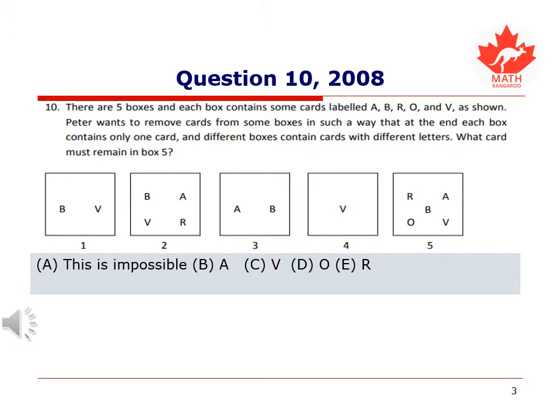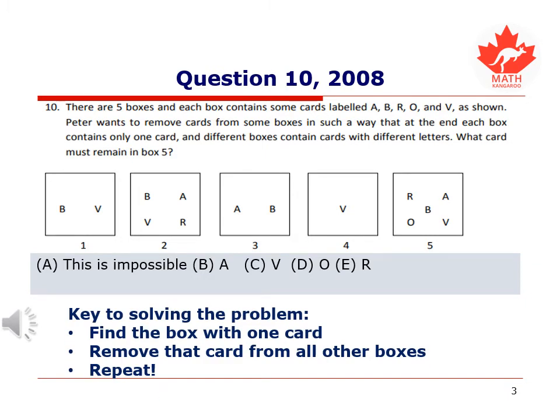We have a guy named Peter who wants to remove the cards from the boxes in such a way that at the end, each box contains only one card and different boxes contain cards with different letters. At the end of this process, we're asked what card remains in box five. The key to solving the problem is you must start with the box that has one card. You then remove that card from all other boxes and repeat this process. Eventually you'll reach a point when there's only one card left in box five.